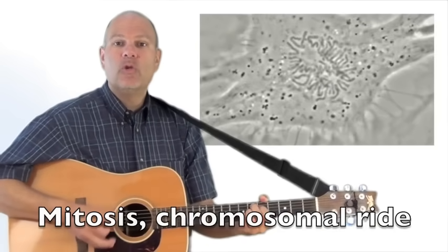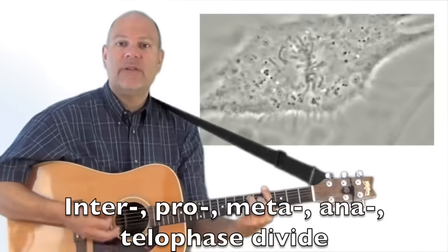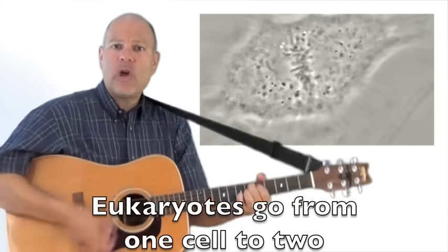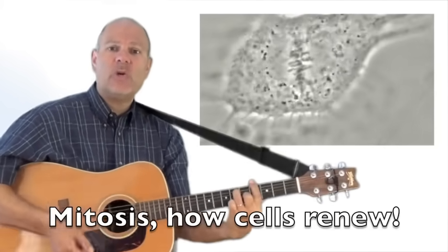Mitosis, a chromosome will ride in a chrome and in anaphase divide. Eukaryotes go from one cell to two. Mitosis, how cells renew.